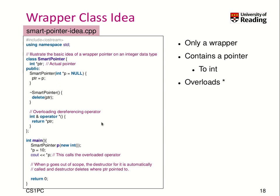In this simple example, we create a smart pointer p with a new integer. When we say star p equals 10, that works. When we print star p, we get the integer value — that works as well. When p goes out of scope and we leave the local block, all local variables are destructed. The smart pointer object p invokes its destructor, which deletes the pointer. So when we go out of scope, we have removed our pointer to the integer without explicitly calling delete — it happens implicitly.